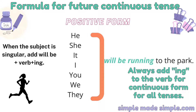To form a positive sentence in future continuous, regardless of whether the subject is singular or plural, you should add 'will be' and add 'ing' to the verb. Always add 'ing' to the verb for all continuous forms for all the tenses.